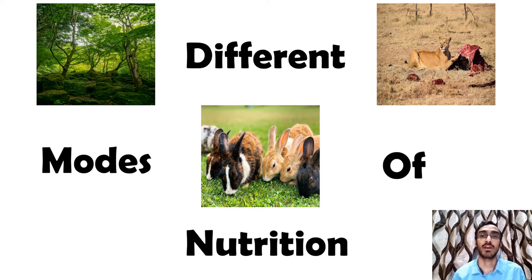Food components include carbohydrates, proteins, fats, vitamins, and minerals. These components together are called nutrients. The process of obtaining food and its utilization is called nutrition.